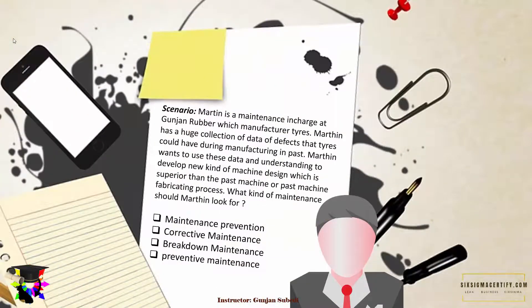Scenario one: Martin is a maintenance in-charge at Gunjan Rover, which manufactures tires. Martin has a huge collection of data on defects that tires could have during manufacture in the past. Martin wants to use this data and understanding to develop a new kind of machine design which is superior to the past machine or past machine fabricating process.